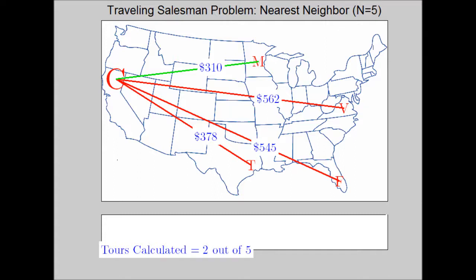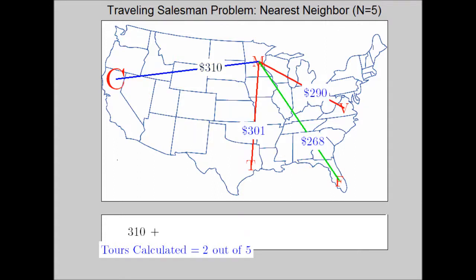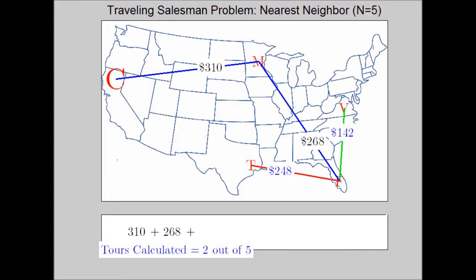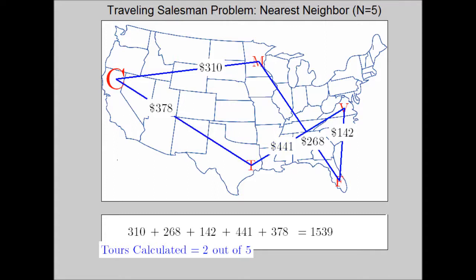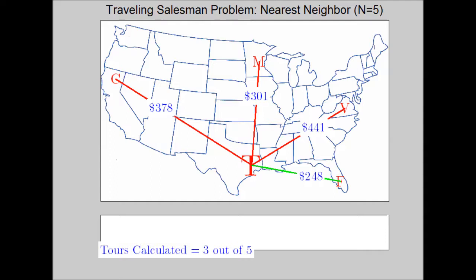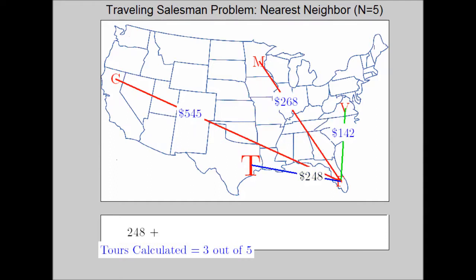You can see here we started from California — to Minnesota was the cheapest option. From Minnesota it goes to Florida, then to Virginia, and at that point going from Texas back to California is already in place and we have no options at that point.